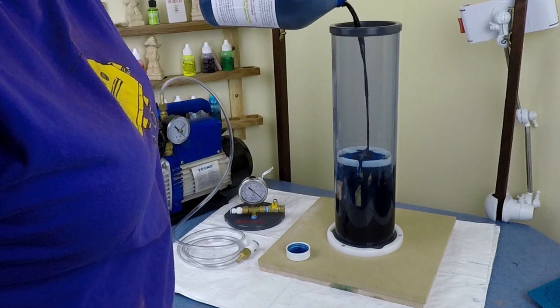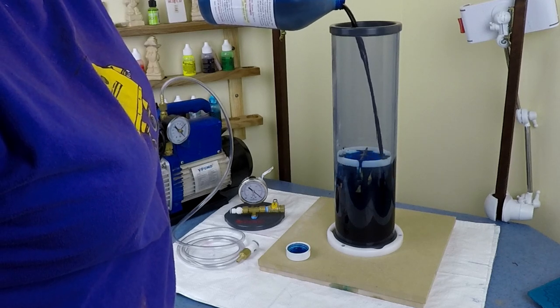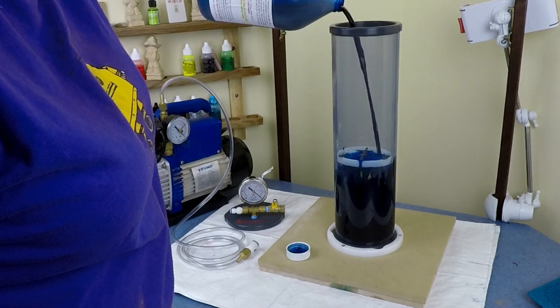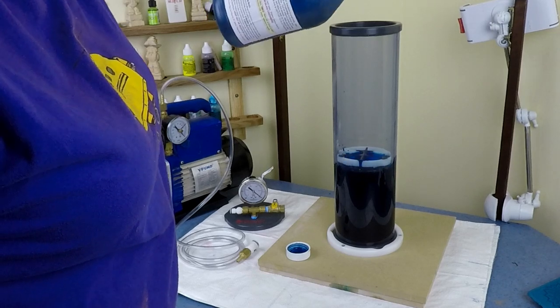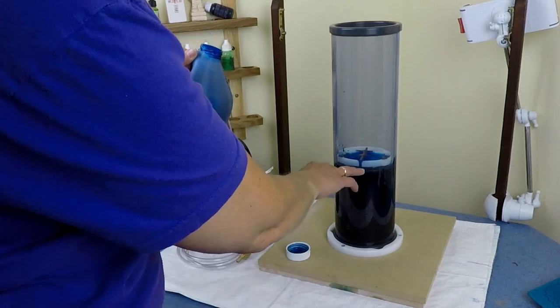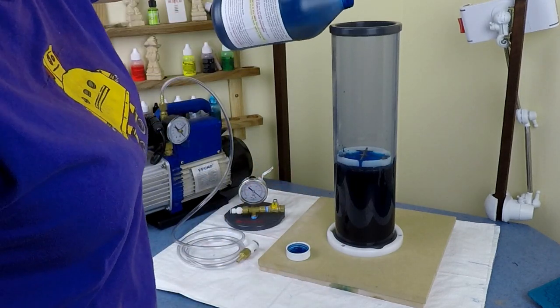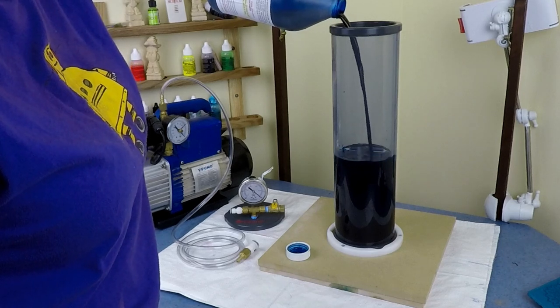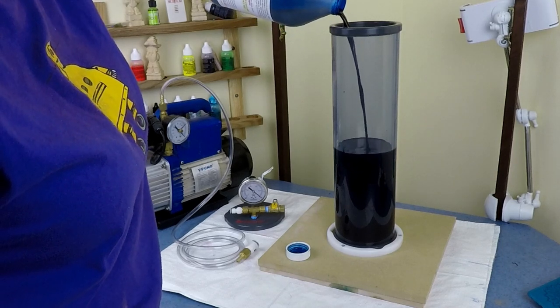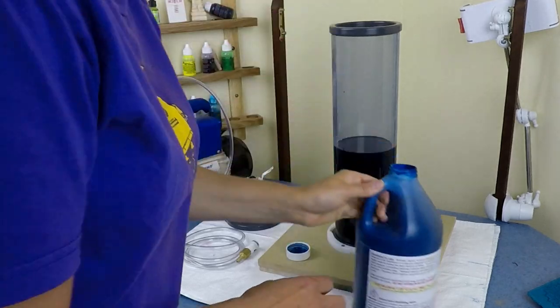These chambers, when you empty out all the resin and that, they can just be washed with soap and water. Now we're aiming for roughly about an inch above the blanks, which is an inch above the bottom of there. So I'm just going to do that.